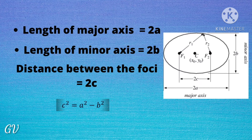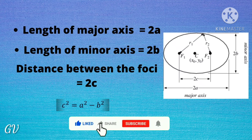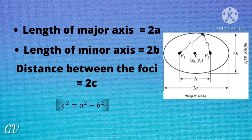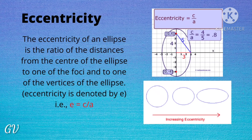Now let's look at the important formulas. The length of the major axis is 2a. The length of the minor axis is 2b. The distance between the two foci is 2c. And the relationship between the values is c² = a² − b².